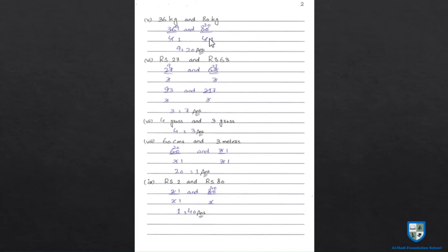Part 6: रुपीज 27 and रुपीज 63. 3 के table से ये दोनों simplify हो सकते हैं — 9's are 27 and 21 times 3 को multiply करें तो 63. 9 and 21 आए — ये दोबारा 3 के table से हो सकते हैं — 3's are 9, 7's are 21. 3 is to 7 is the most simplest ratio of 27 and 63. Part 7: 4 रुपीज 3 — किसी भी table से दोनों divide नहीं होते — so 4 is to 3.